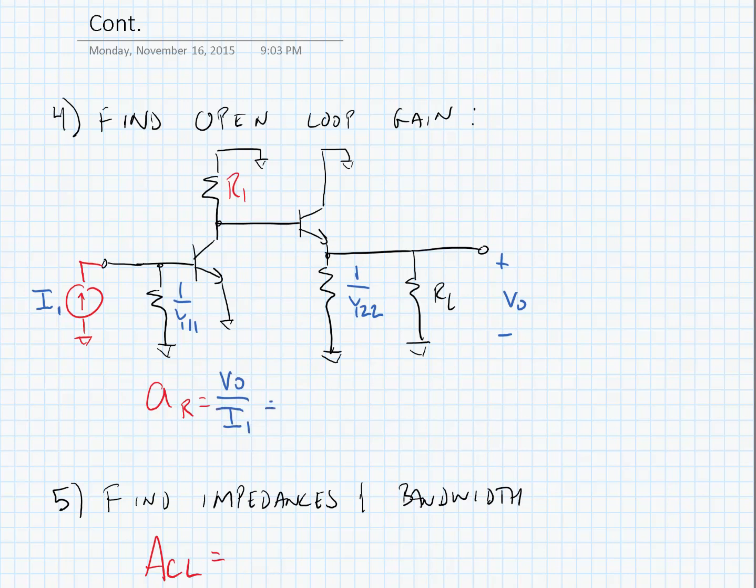This is equal to rpi1 parallel with RF times gm1 times R1 as drawn. This is the case because transistor Q2 is acting as a buffer.